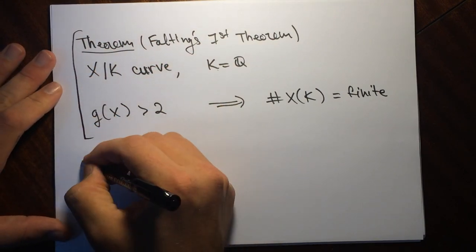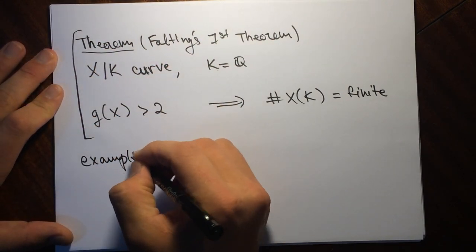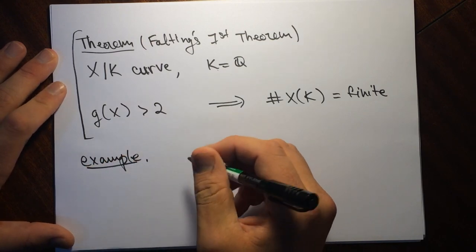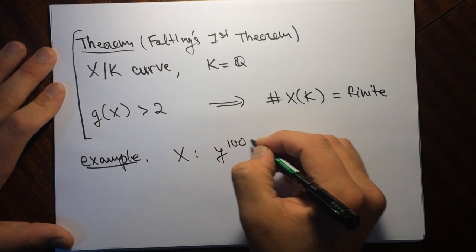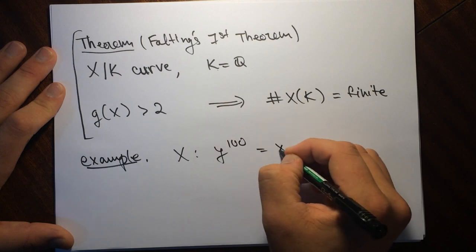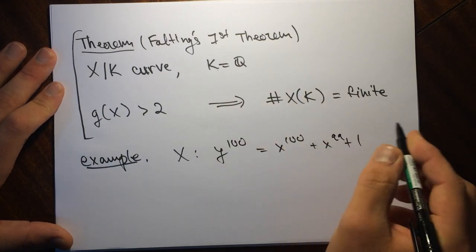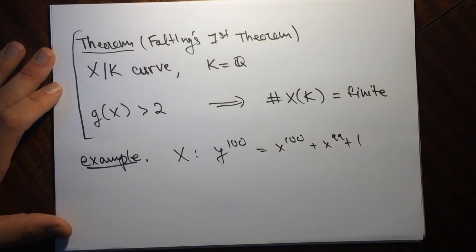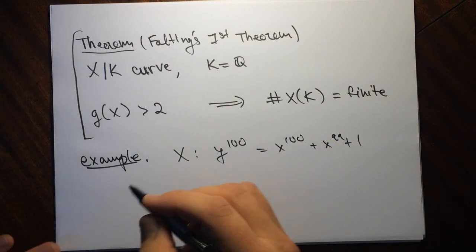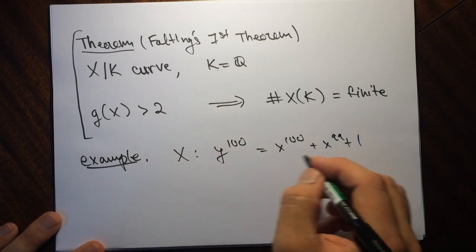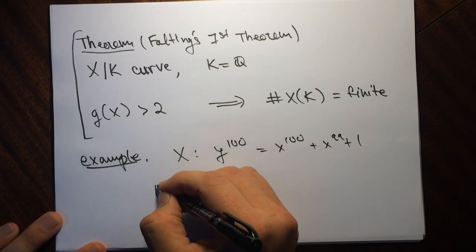The example you should keep in mind is: if you take X to be like y to the 100 equals x to the 100 plus x to the 99 plus 1 or something — so you take something of high degree — then the genus here is high degree, so this will have a finite number of points.